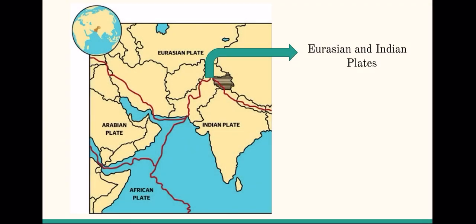Kashmir is located on the Eurasian and Indian plates, so when the earthquake occurred, it created a fault. In certain cases, the ground moved 7 meters or 22 feet apart. It caused tremendous amounts of tremors and landslides because it occurred at the center of where cliffs and mountains were located.